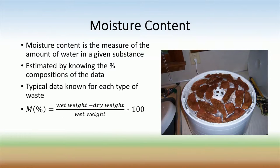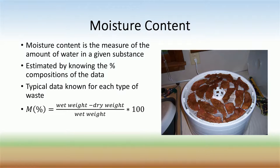Moisture content is the measure of the amount of water in a given substance. We are interested in the moisture content of municipal waste because it adds additional weight to the waste stream, aids in bacterial decomposition of waste in the landfill, and over time it leaches out of landfills in a toxic stream called leachate. In order to estimate the moisture content of a waste stream entering the landfill, we use the approximated moisture content of each component found in our composition determination methods. Food waste, for example, is approximately 70% water by weight. To calculate the moisture content of an item as a percentage, you take the difference between the wet and dry weights and divide by the wet weight.